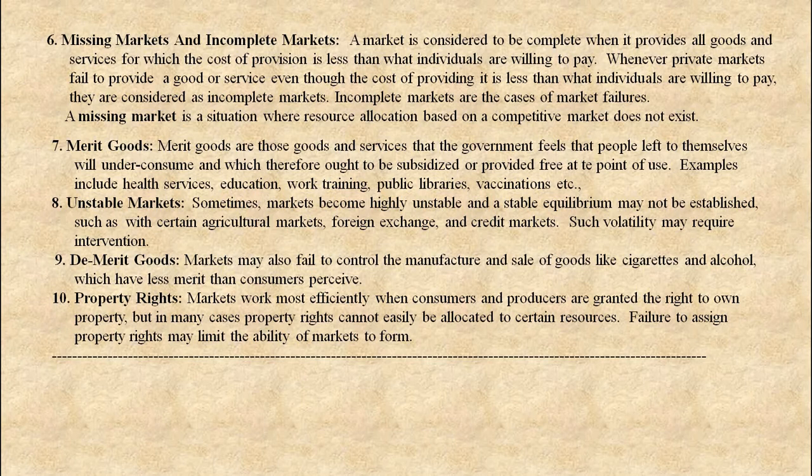Next: Unstable markets. Sometimes markets become highly unstable and a stable equilibrium may not be established, such as with certain agricultural markets, foreign exchange markets, and credit markets. Such volatility may require government intervention. Next: Demerit goods. Most markets may also fail to control the manufacture and sale of goods like cigarettes and alcohol, which have less merit than consumers perceive.